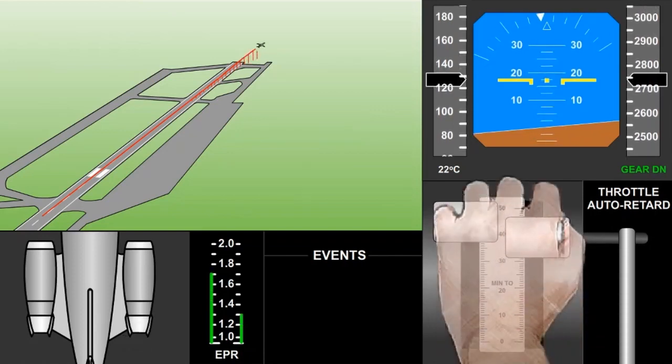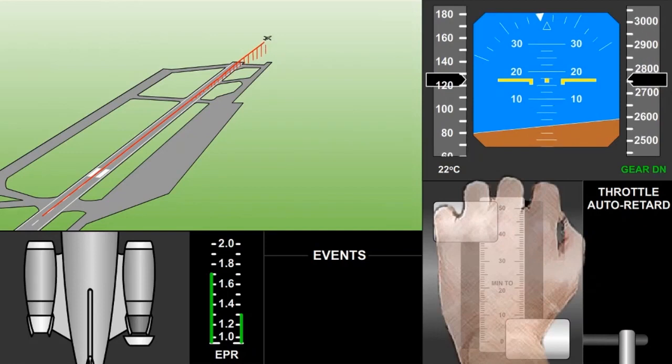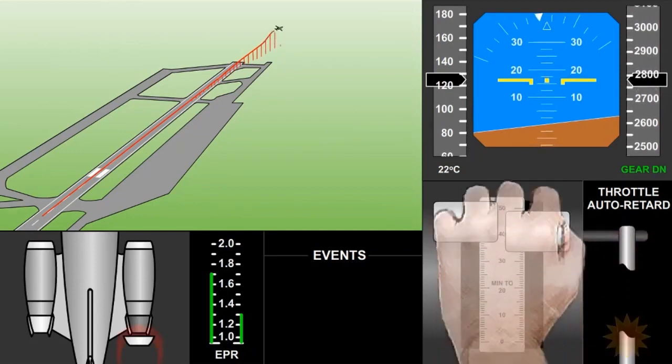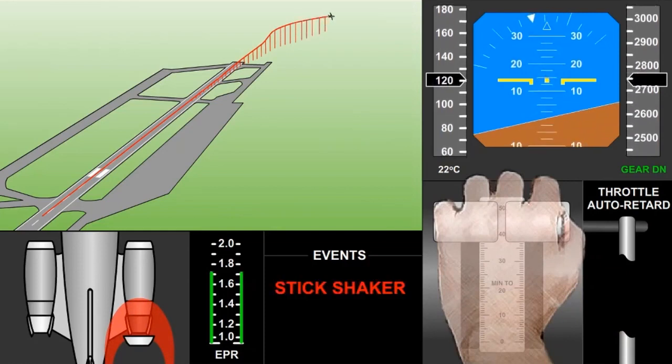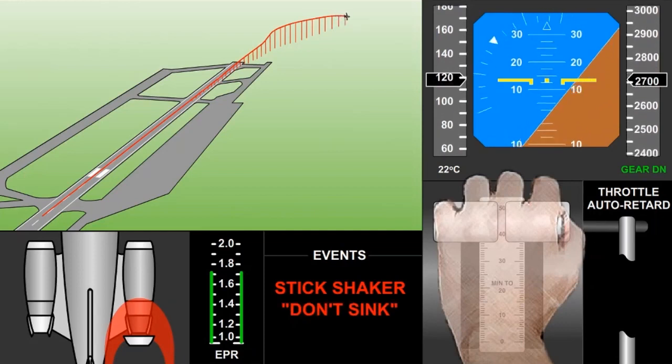The captain told him to turn off the autothrottles as the right lever snapped back a third time. He forced the lever forward again, and both sets of engine instruments moved to normal indications. As a result of the right engine developing full reverse thrust, the airplane decelerated until it stalled.